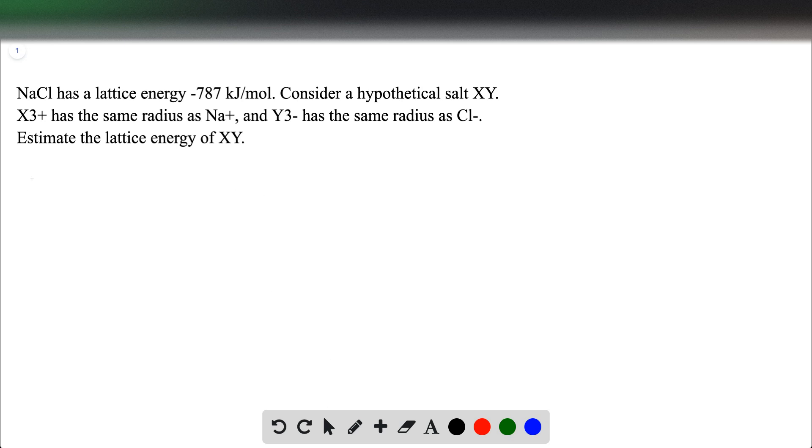First, we can refresh ourselves on Coulomb's Law, which is energy equals 1 over 4 pi E naught times Q1 and Q2 over the radius R. These guys are constants, so we can just cross them out.